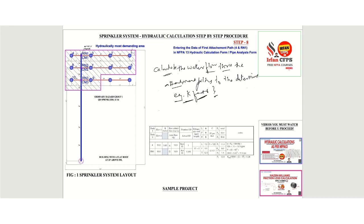Once we finish this attachment path calculation, we will move ahead with the primary path calculation. We can draw the isometric once again so that it will be easy for us to understand.